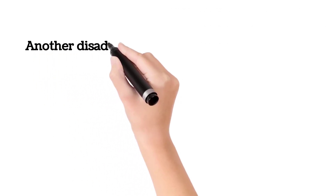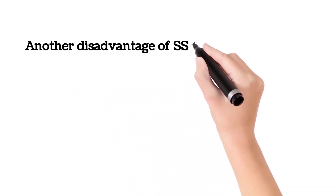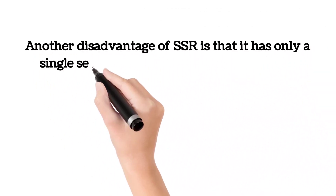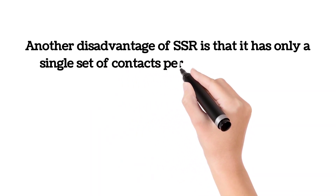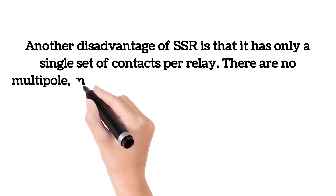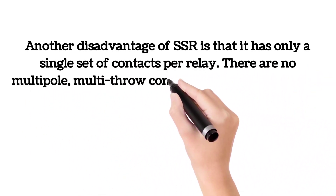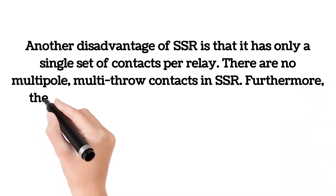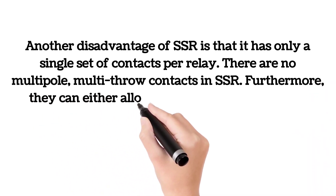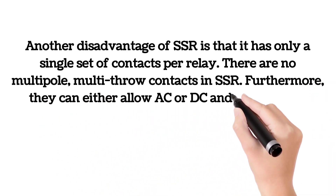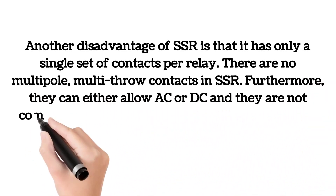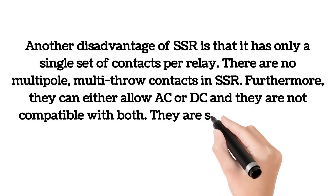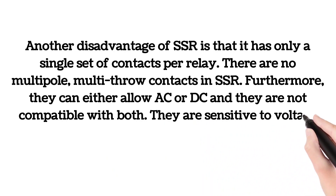A disadvantage of SSR is that it has only a single set of contacts per relay — there are no multi-pole, multi-throw contacts in SSR. Furthermore, they can either allow AC or DC and are not compatible with both. They are also sensitive to voltage transients.